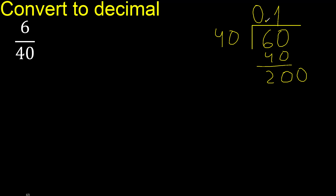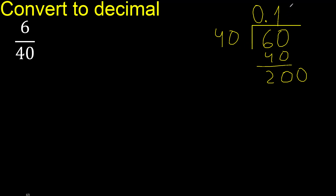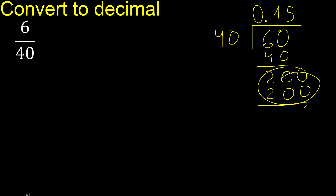Here is the point. 40 multiplied by which number? Multiplied by 5 is 200. Subtract: 0. Therefore finish.